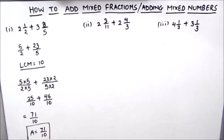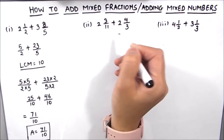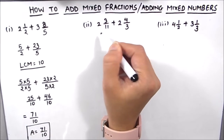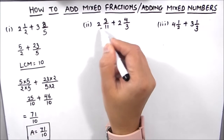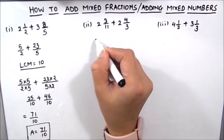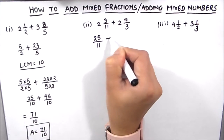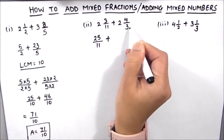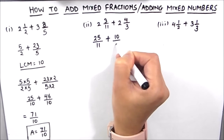Let's move on to our second example and add the two mixed numbers there. We will do the first step, which is converting these mixed numbers into improper fractions. So 11 times 2 is 22, plus 3 is 25 — this is 25/11. Plus 3 times 2 is 6, and 6 plus 4 is 10 — so 10/3.